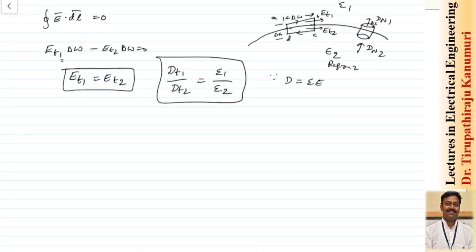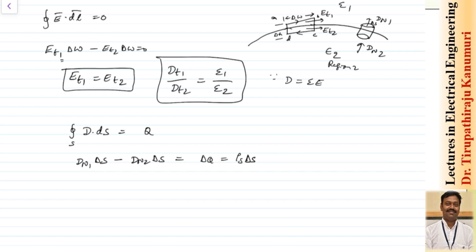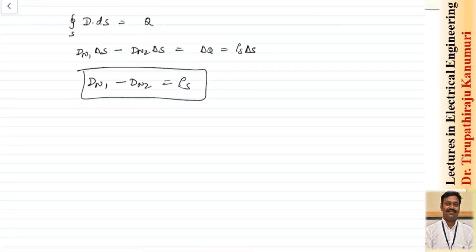For calculating the normal component, we use the surface integral of D dot dS, which equals the charge enclosed Q. As delta h tends to 0, only the top and bottom surfaces remain. The top gives Dn1 times delta s, and the bottom Dn2 in the opposite direction gives minus Dn2 times delta s, equal to delta q, which equals rho s times delta s. Therefore, Dn1 minus Dn2 equals rho s.